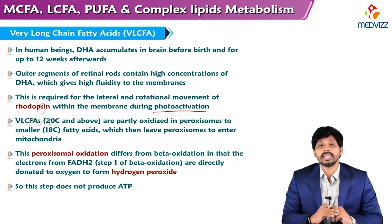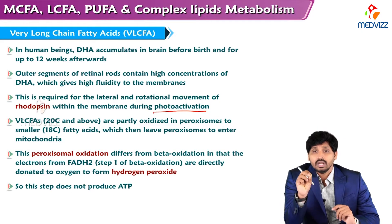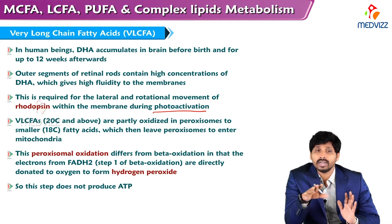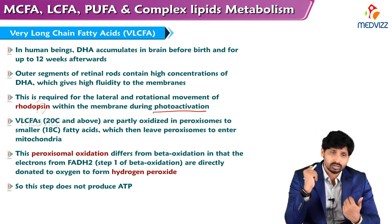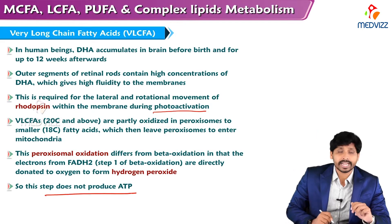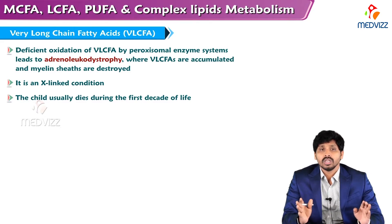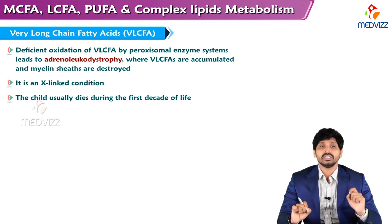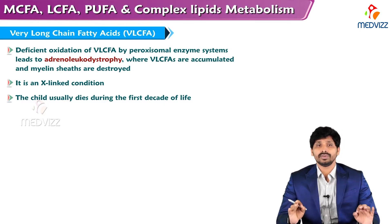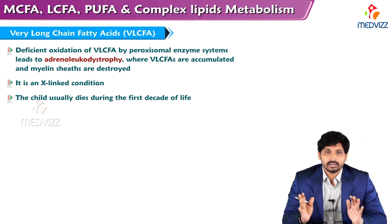Very long chain fatty acids are first metabolized in peroxisomes and later in mitochondria. Peroxisomal oxidation differs from beta oxidation in that electrons from FADH2 are directly donated to oxygen to form hydrogen peroxide — no ATP is produced. In contrast, in mitochondrial beta oxidation no hydrogen peroxide is generated. If there is deficient oxidation of very long chain fatty acids by peroxisomal enzymes, it leads to adrenoleukodystrophy, where very long chain fatty acids accumulate and myelin sheaths are destroyed. Adrenoleukodystrophy is an X-linked condition; the affected child may not survive more than 10 years of life.